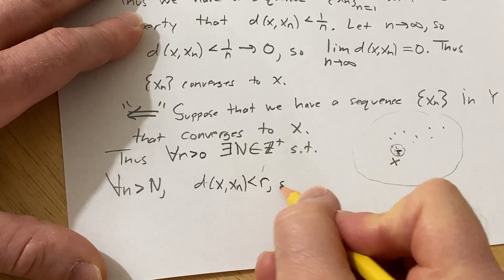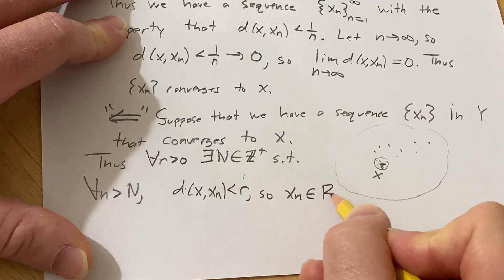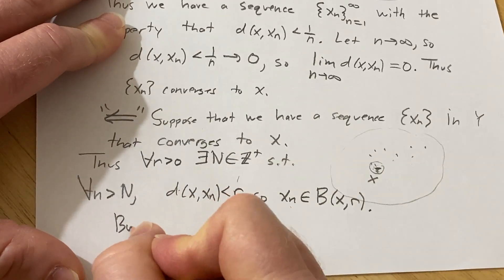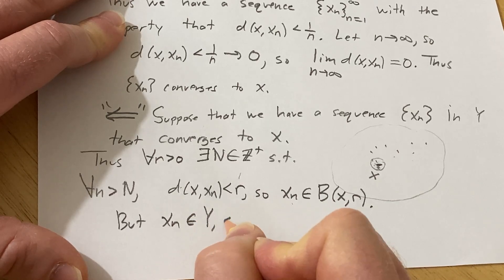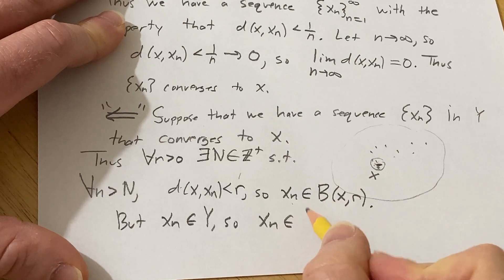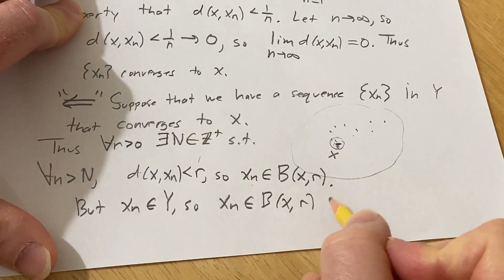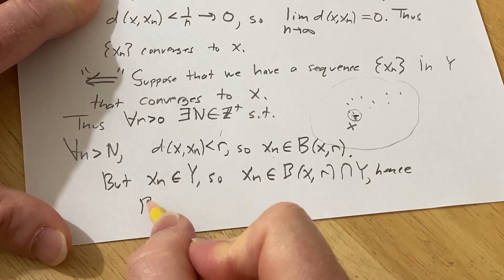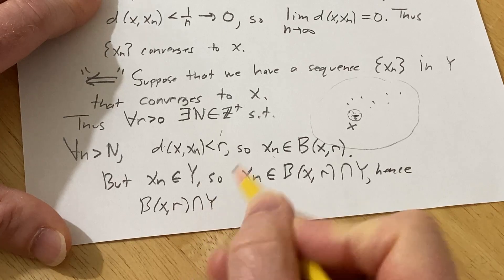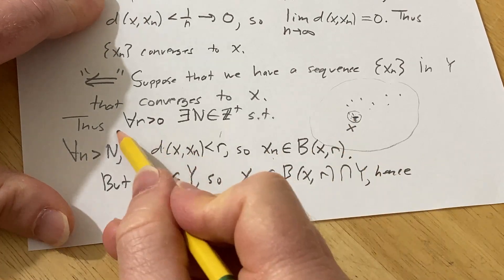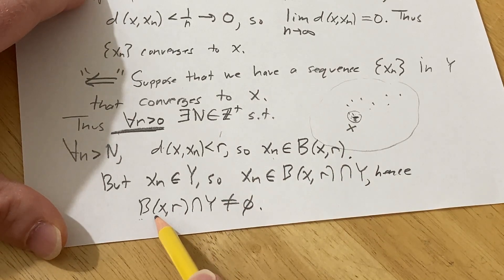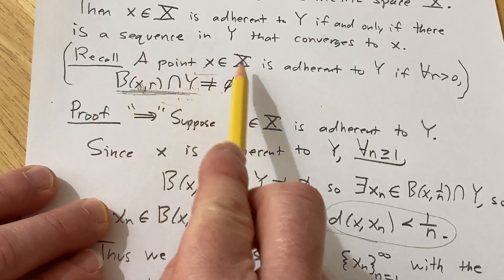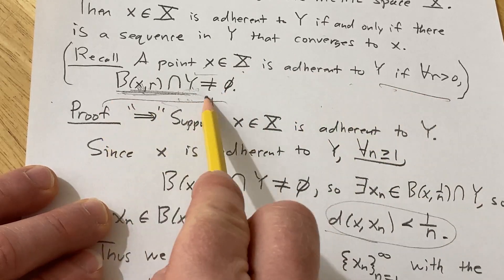Okay, so that means that x sub N is in the ball centered at x of radius r. But x sub N is a sequence in Y. But x sub N is also in Y. So that means that x sub N is in the intersection of this ball centered at x of radius r intersected with Y. So therefore the intersection is non-empty. Hence, this intersection of the ball centered at x of radius r with Y is non-empty. So for all r greater than zero, we have that the open ball centered at x of radius r intersected with Y is non-empty. That is precisely what it means for x to be adherent to Y.